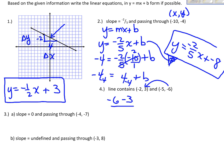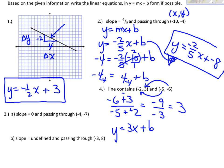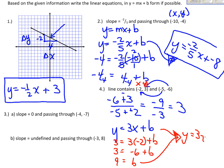Going right to left: negative 6 minus 3 over negative 5 minus negative 2. Be careful with the negative signs — there's always a subtraction in the middle. Negative 6 minus 3 is negative 9, and the bottom gives negative 3. Negative 9 divided by negative 3 is positive 3, so my slope is 3. I write y equals 3x plus b, then plug in the ordered pair negative 2, 3 for x and y: 3 equals 3 times negative 2 plus b. Adding 6 to both sides gives b equals 9, so y equals 3x plus 9.